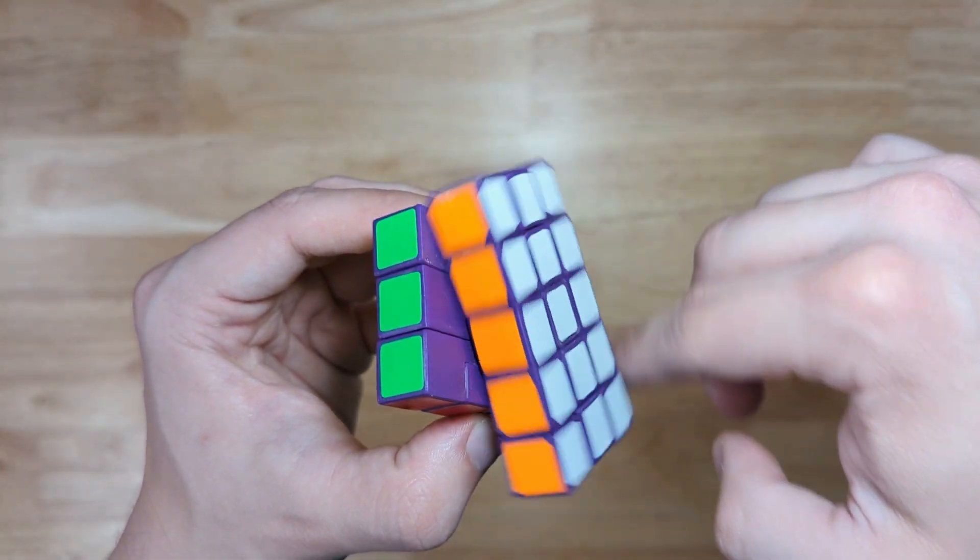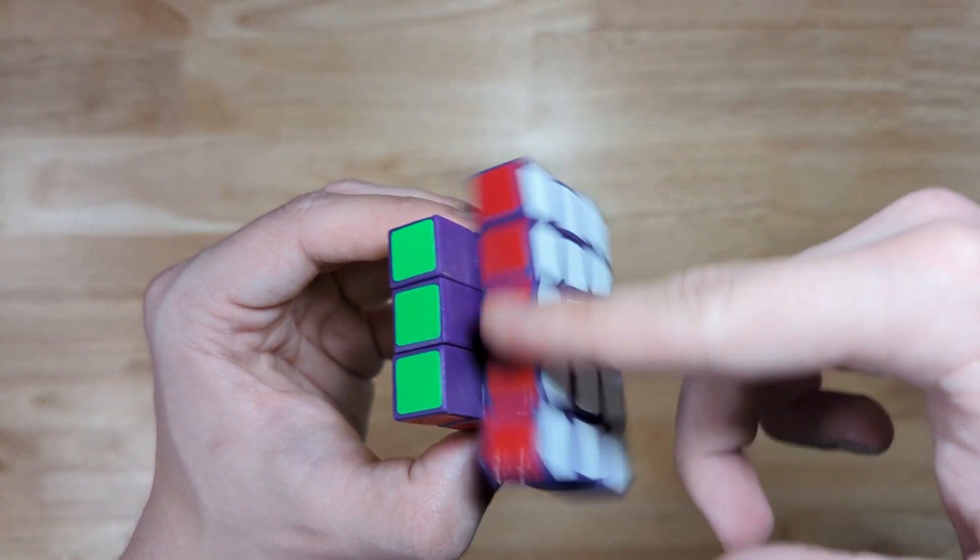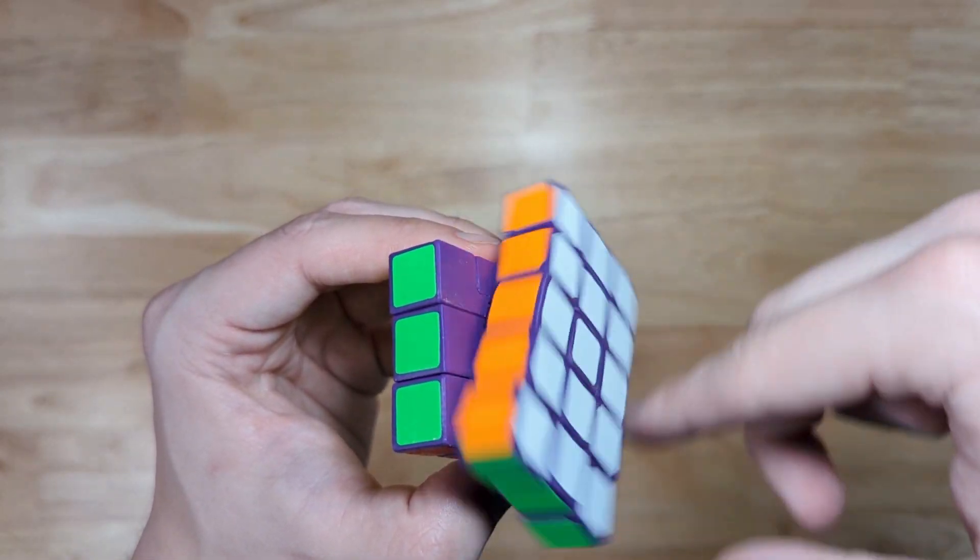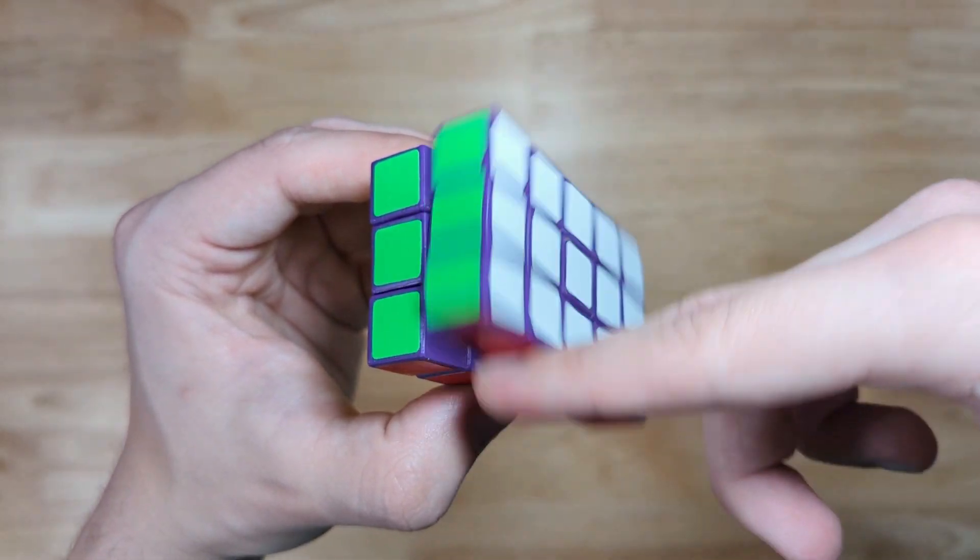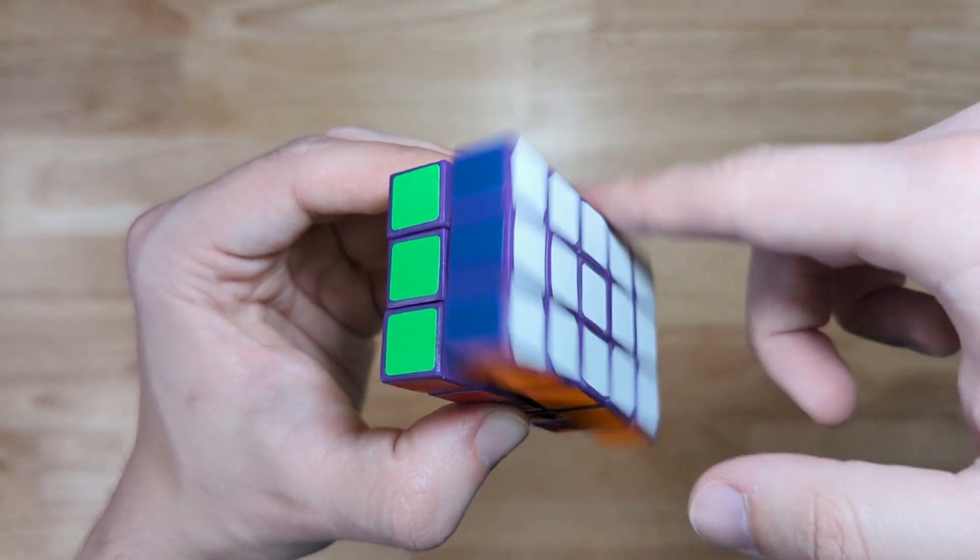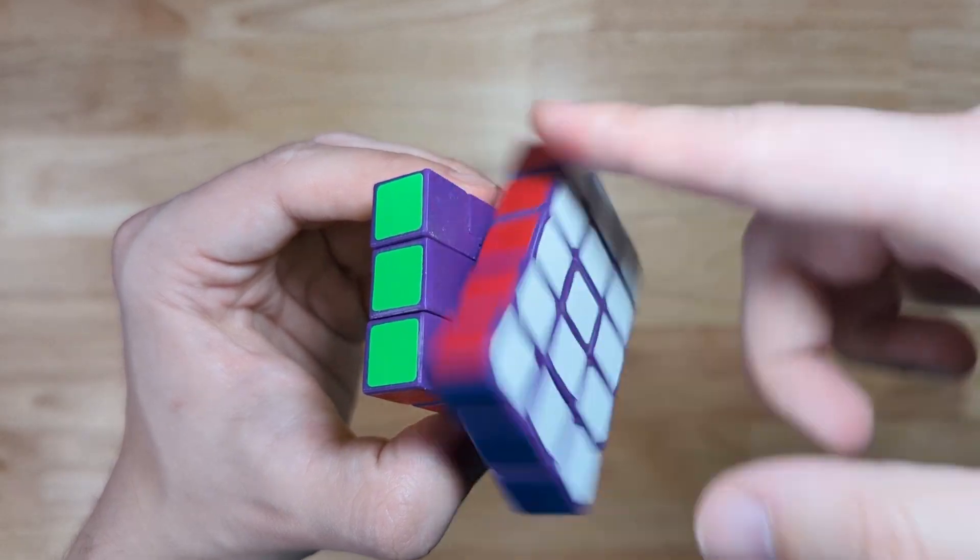The only screw in this entire puzzle is the one holding the two halves of the core together meaning that only the 3x5 face turn is tensionable. Everything else depends on the puzzle's tolerances and clearances which is a fairly common design for two layered puzzles with cuboid geometry.